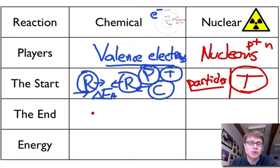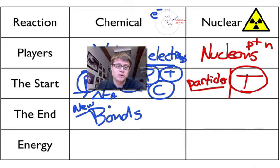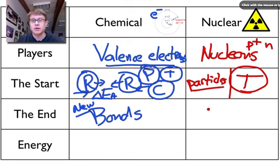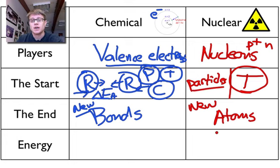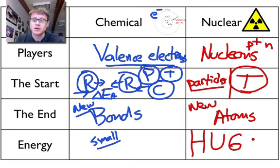What about the end then? What do we create at the end of a chemical reaction? We create bonds, or there are new bonds that are formed. Well what's formed in a nuclear reaction? In a nuclear reaction we're going to form not bonds, but since we're changing the amounts of protons we're going to end up with new atoms. The last type is the amount of energy. The amount of energy in a chemical reaction is going to be really small. You wouldn't say that dynamite is a small amount of energy that's released, but it's relatively small compared to the amount of energy we get from a nuclear reaction.